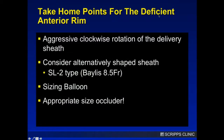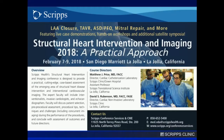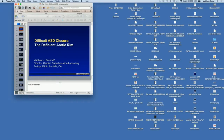Takeaway points for deficient aortic rims: aggressive clockwise rotation of the delivery sheath; consider alternately shaped sheaths — if you have a smaller device, perhaps the Bayless SL2 imitation sheath; use a sizing balloon simultaneously; and use an appropriately sized occluder. And a pitch — Paul is one of my key faculty for my February course at Scripps in La Jolla. Come to La Jolla in February; we do a lot of multidisciplinary interventions and imaging.